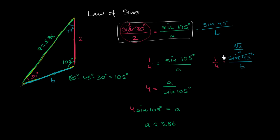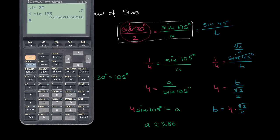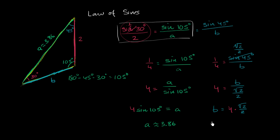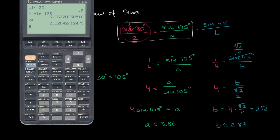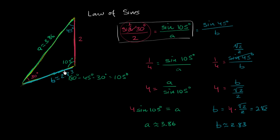Now let's figure out what B is. Taking the reciprocal of both sides gives us 4 equals B over square root of 2 over 2. Multiplying both sides by square root of 2 over 2, we get B is equal to 4 times square root of 2 over 2, which simplifies to 2 square roots of 2. That is approximately equal to 2.83. So B is approximately equal to 2.83, which also seems pretty reasonable.